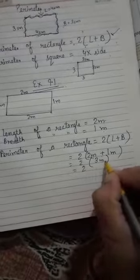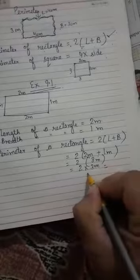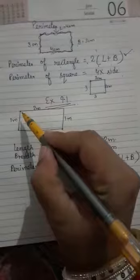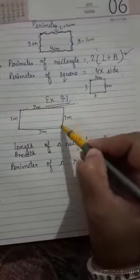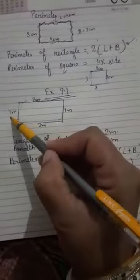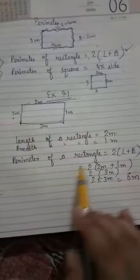Bracket means multiply. 2 multiply by 3 meters is equal to 6 meters. Now, perimeter means length of all sides: 6 meters. 2 plus 1 equals 3, 3 plus 2 equals 5, 5 plus 1 equals 6. 6 meters. Now perimeter of rectangle is 6 meters.